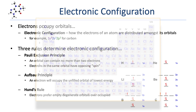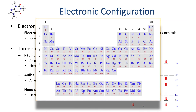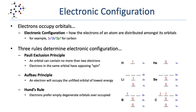Beryllium has an atomic number of four, so four electrons. We populate similarly: two electrons into the 1S orbital, the third electron into the 2S orbital, and then the fourth electron also goes into the 2S orbital, filling it.